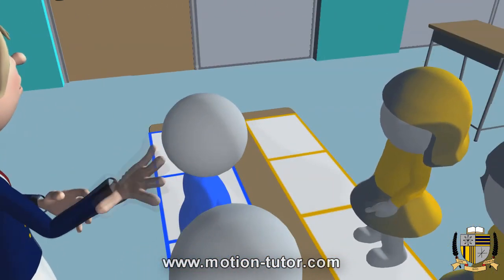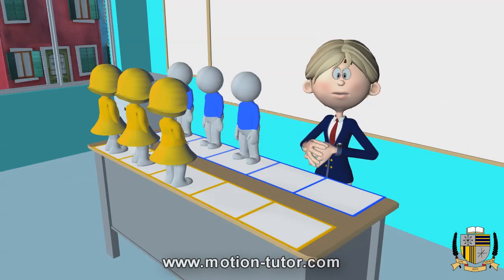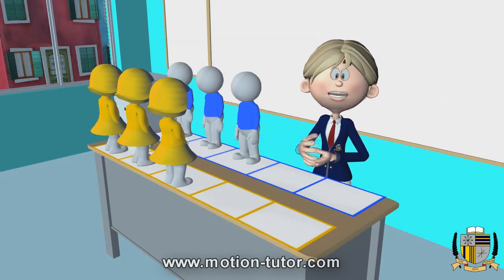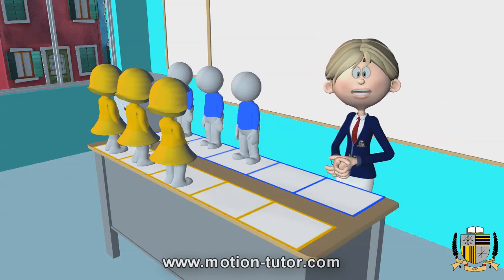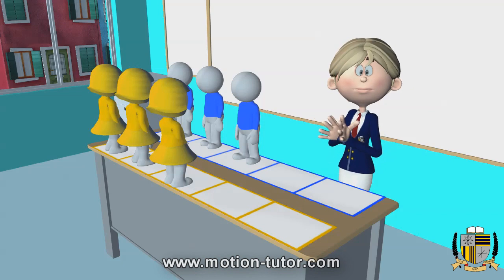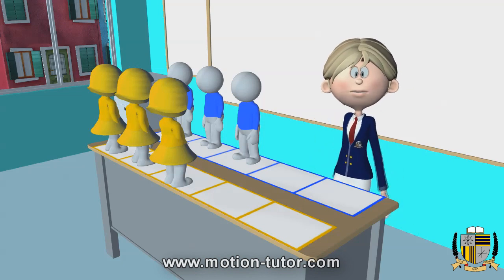We will find out if the number of blue boys on the blue five frame is greater than, less than, or the same number as the yellow girls on the yellow five frame. Now let's take a look.